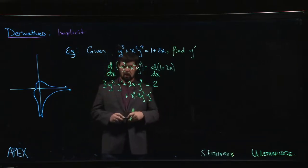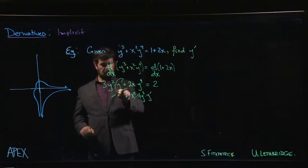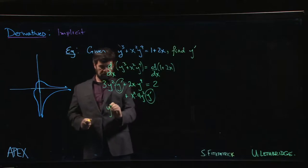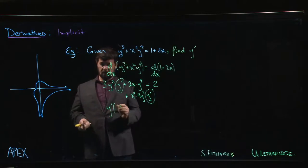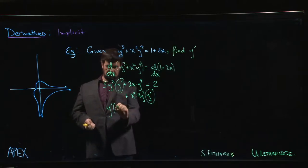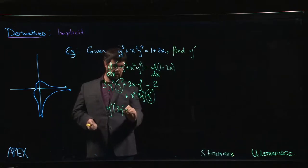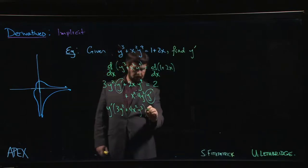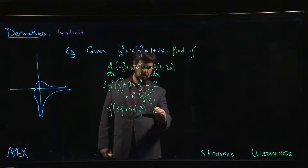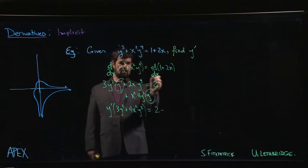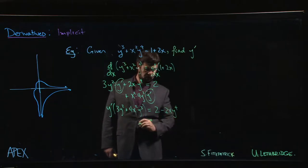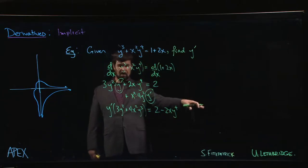So again we have to solve for y prime. So we look for where are all the terms of the y prime. There's one here, there's one there. So we have to collect those terms, factor out whatever they're being multiplied by. So we have a 3y squared and then we have a 4x squared y cubed coming from here. And on the other side, well we move this remaining term over. So we have 2 minus 2xy to the 4. Anything that doesn't have a y prime, put it on the right hand side.